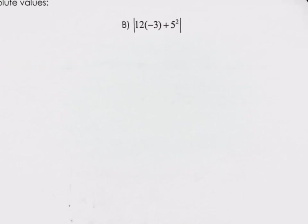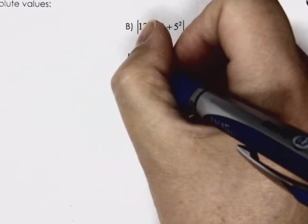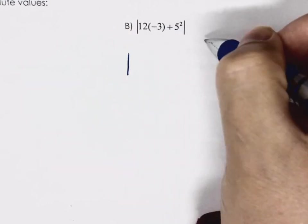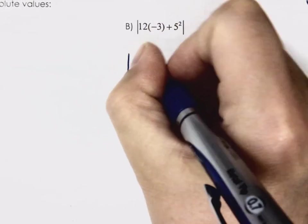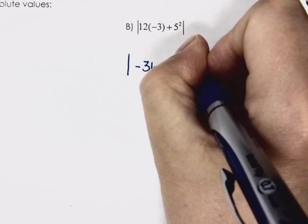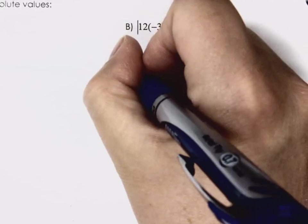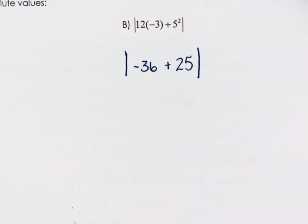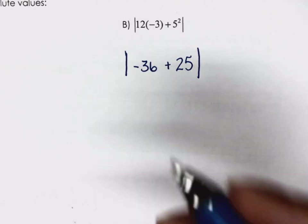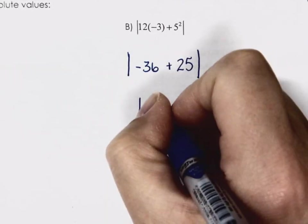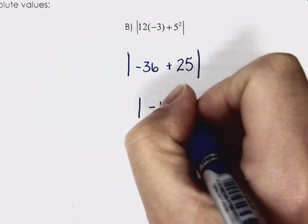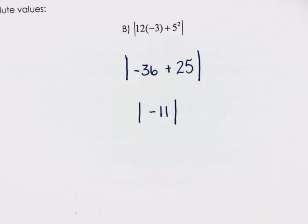Now coming over to Part B. Everything is inside the brackets, so order of operations says do what's inside first, then deal with the exponents. I can multiply and deal with the exponents at the same time: that gives negative 36 plus 25, still inside absolute brackets because I haven't evaluated the absolute yet. That gives negative 11.